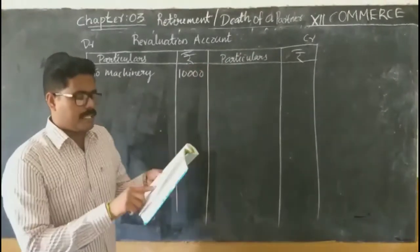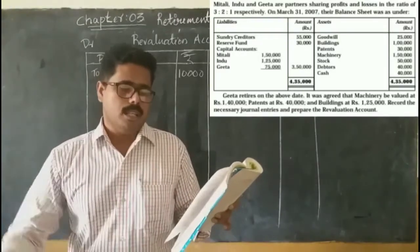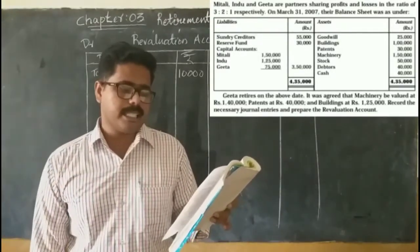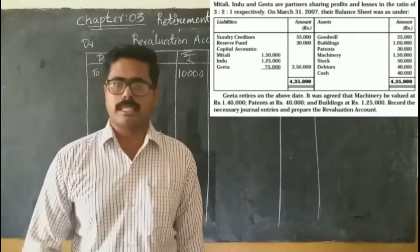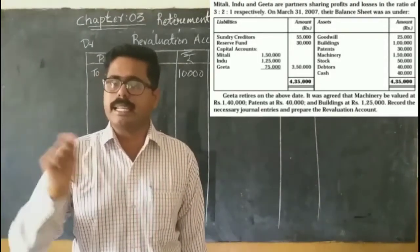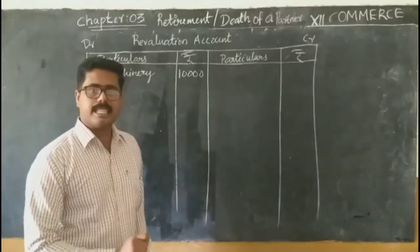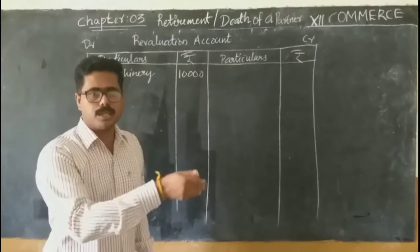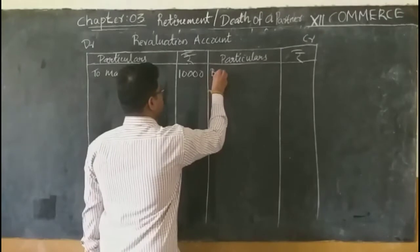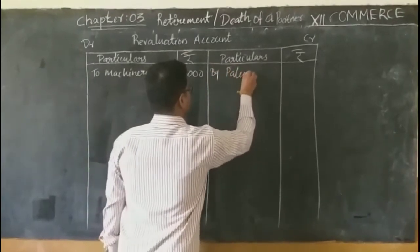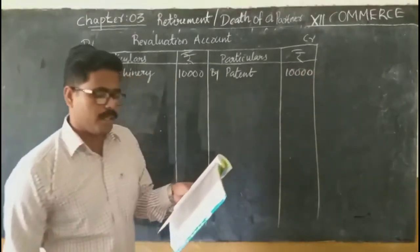The next item is patent. As per the balance sheet, patent was 30,000, and its current value is 40,000 — so it increased by 10,000. Patent is an asset; asset increase is a gain to the organization, so it is recorded on the credit side: 'by patent — 10,000'.